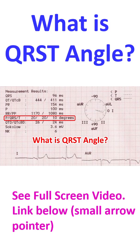The QRST angle widens in the presence of ischemia and hypertrophy, accounting for the ST-T wave becoming discordant to the QRS complex.